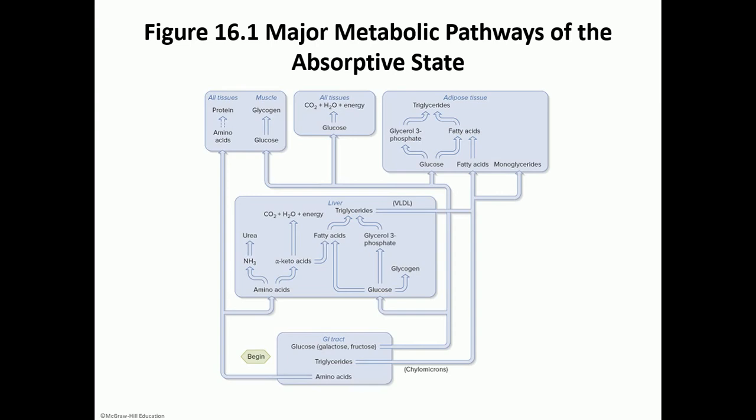We're going to start with the major metabolic pathways of the absorptive state. First, we want to understand what the absorptive state is and what the post-absorptive state is. The absorptive state means this is the state of your body when you eat a meal — just had a meal, whether it's carbs, proteins, fats, or a combination. Your body's main source of energy would be glucose.